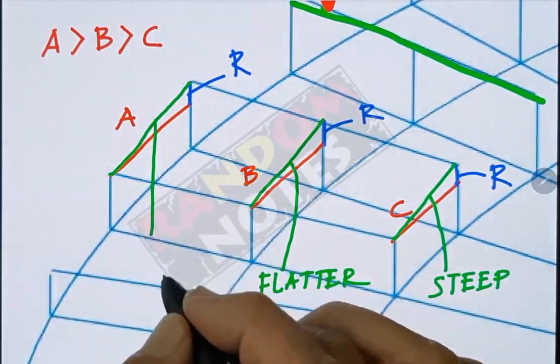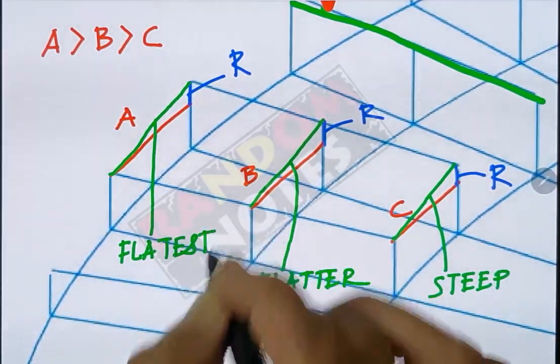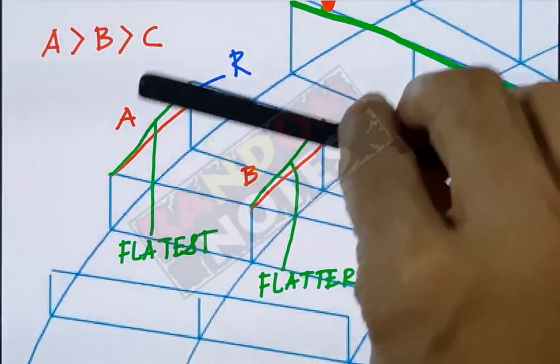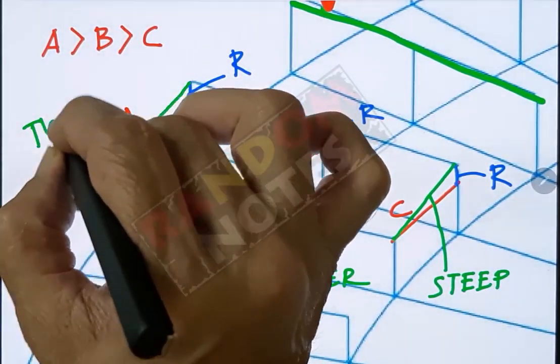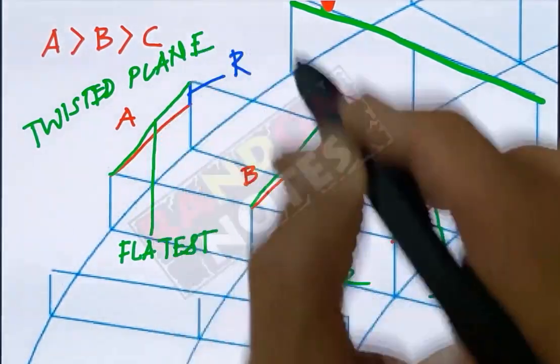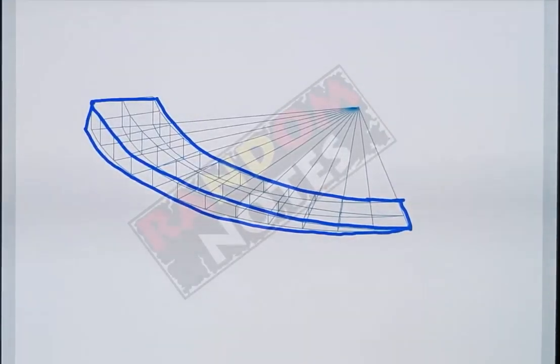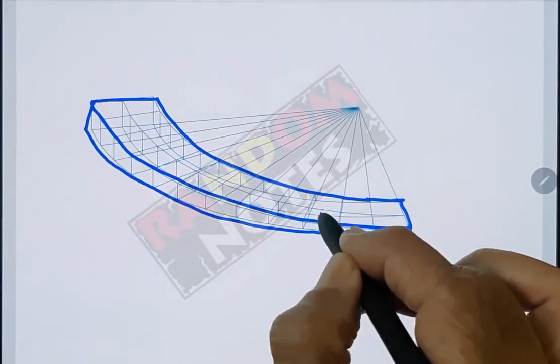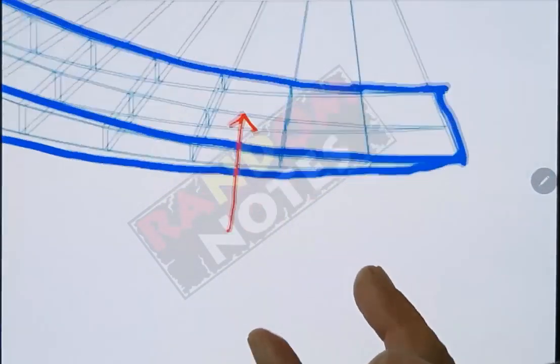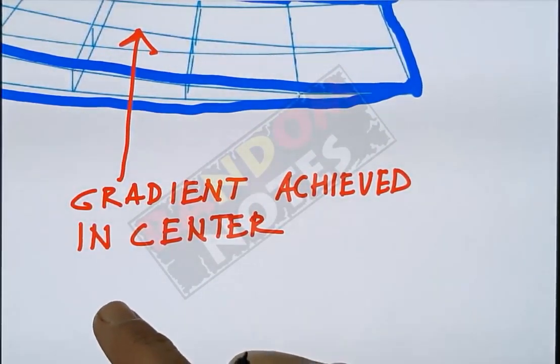And when you will cover them with a plane, you will get a twisted plane. So when you cover the complete ramp like this, the ramp will be achieved with the desired slope in the center. There will be slightly less slope at the outer edge and slightly more slope on the inner edge.